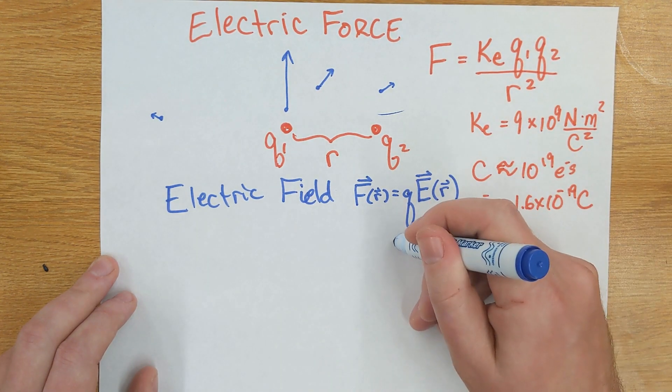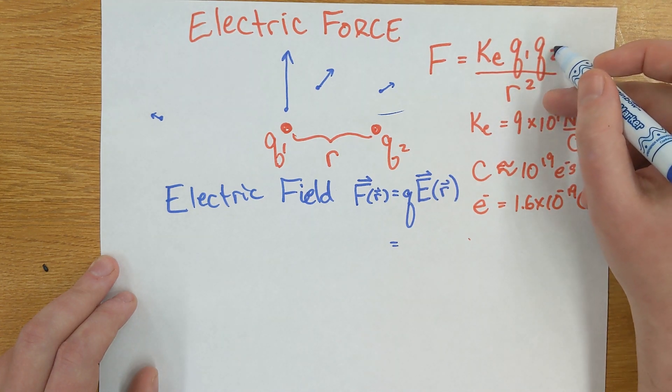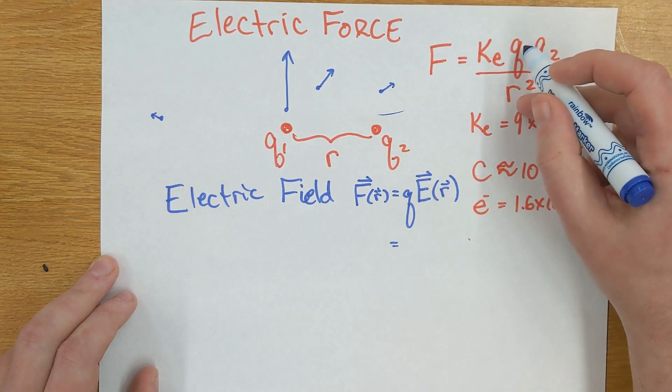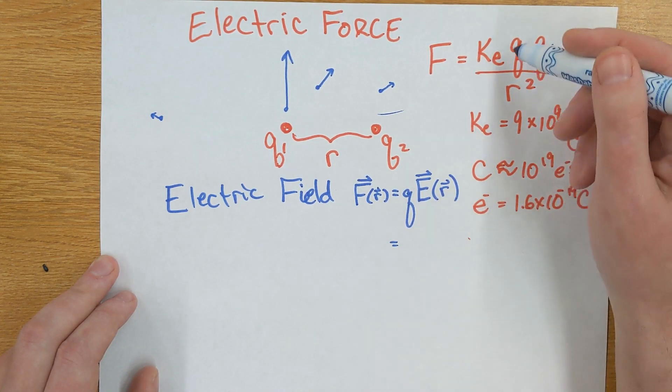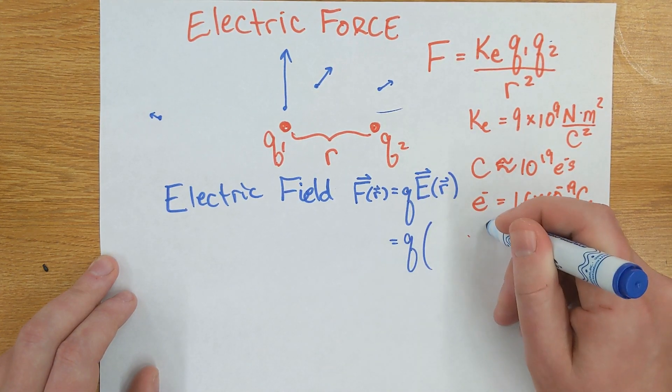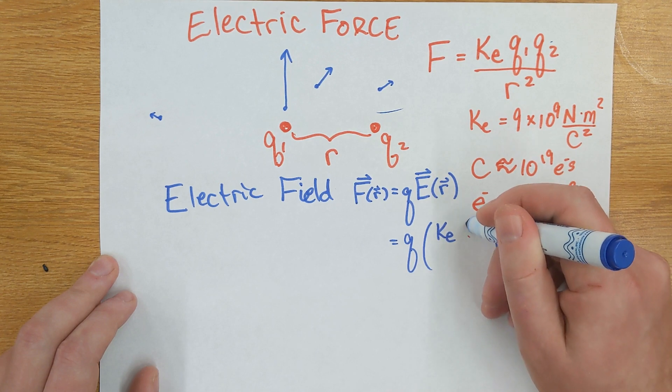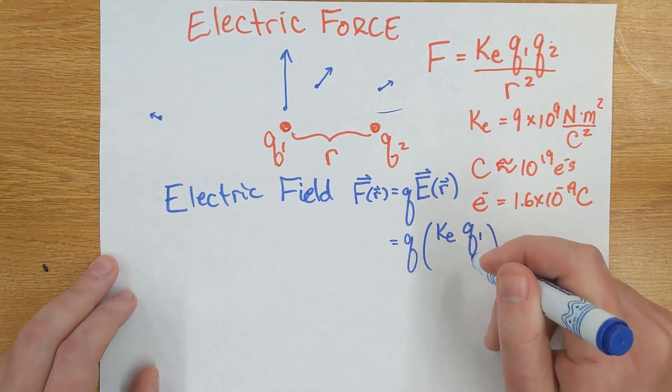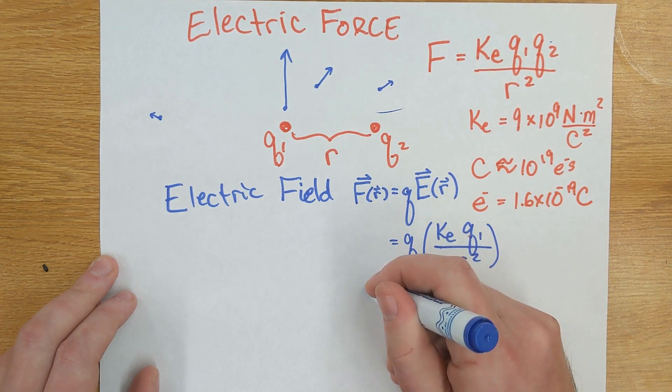So what must E be? Well, I already see if I take out one of these q's, if I take out q2, then I know what the force would be due to q1 if I put a q2 there. So the electric field is just everything that's left. So this is q times whatever the electric field is, so that must be ke times q1 over r squared. And this thing we call the electric field.